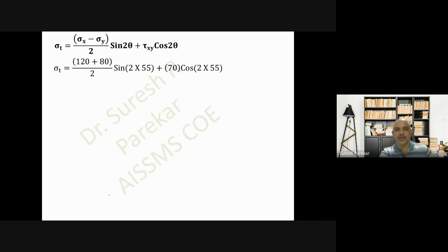Then σt: we have (120 + 80)/2 sin(110°) + 70 cos(2×55°), and we will get this value equal to 70 MPa.